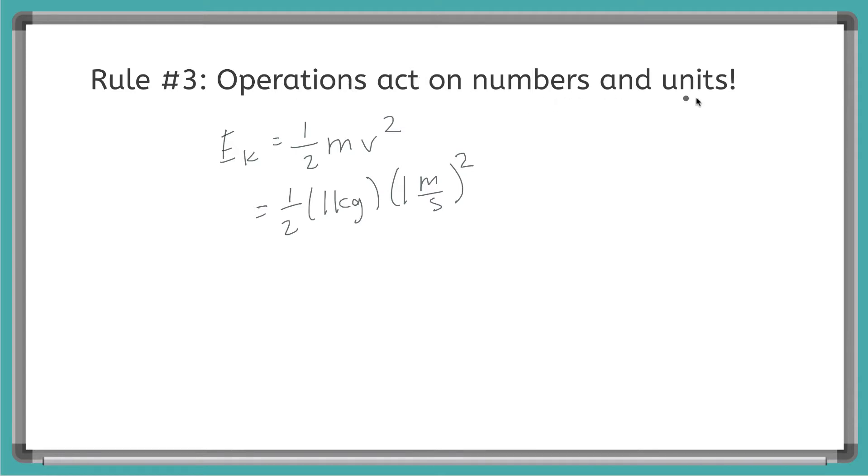Operations act on numbers and units. So let's do the velocity squared first. So this is going to say one half, one kilogram, and now watch. I'm going to square the number, and I'm also going to square my units. So I'm going to get one meter squared over second squared. And this stays one because one times one is still equal to one.